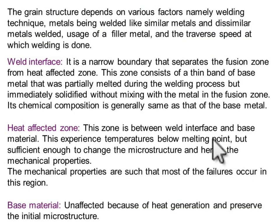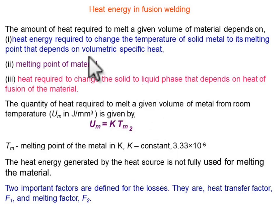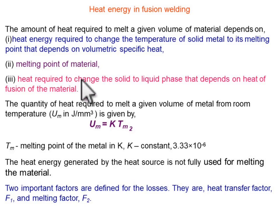Now, regarding heat energy in fusion welding — in fusion welding, we melt both the filler material and the base material. Two kinds of heat interaction are needed: first, to elevate the temperature of the solid metal to the melting point, and second, to cause the phase change from solid to liquid by providing latent heat. The heat energy required depends on the volumetric specific heat and the melting point of the material, as well as the heat of fusion of the material.